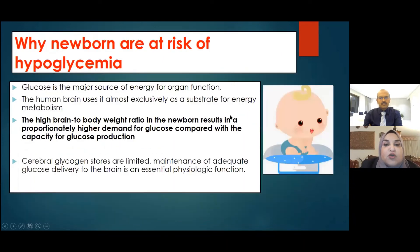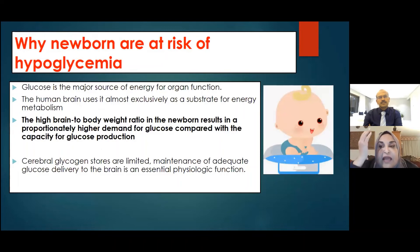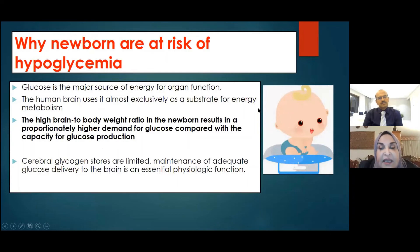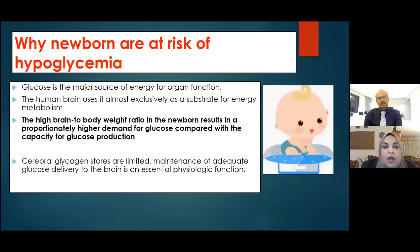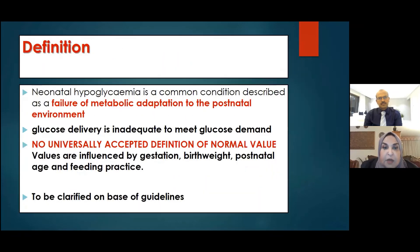We shouldn't forget that even the healthy newborn, because of the high brain-to-body weight ratio, has a demand for glucose that is higher than the supply. They need glucose for their brain tissue, and the high brain-to-body weight ratio makes their demand very large.